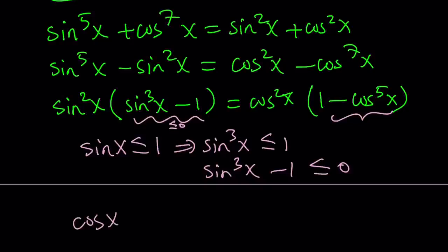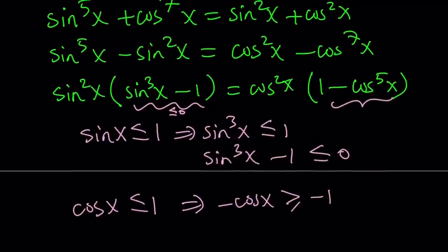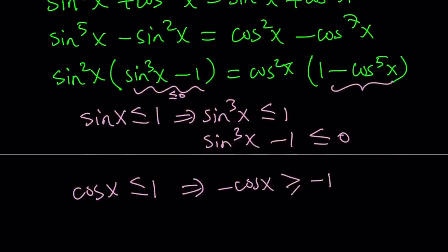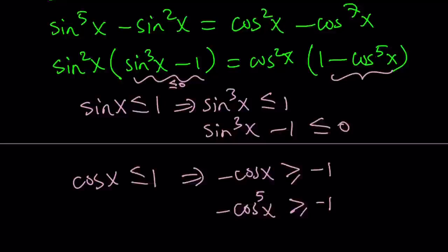Cosine x is less than or equal to one. And from here, if you multiply both sides by negative one, negative cosine x is going to be greater or equal to negative one. You know that, right? It's always greater or equal to negative one. And then we can just raise both sides to the fifth power. So, here, that gives us this. Same thing. And then if we add one to both sides,